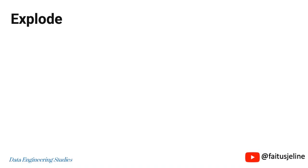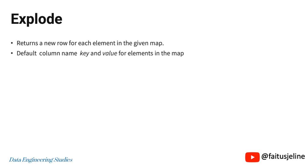Now let's see how the Explode function works when we pass a map. The Explode function returns a new row for each element in a given map. The default column names are 'key' and 'value' for elements in the map. If the map is null, that row will be eliminated.